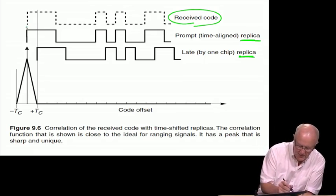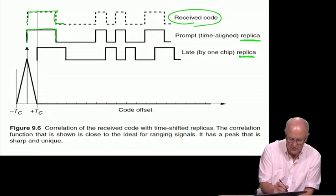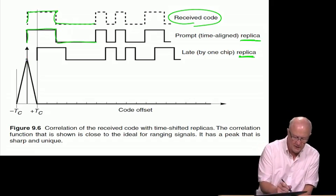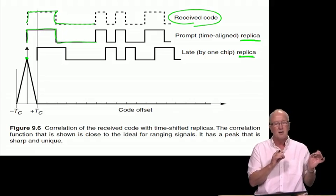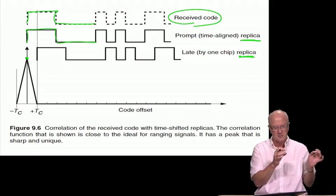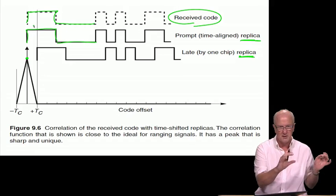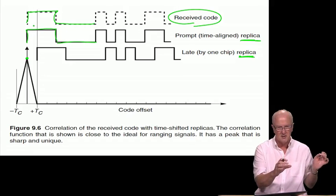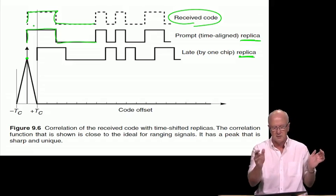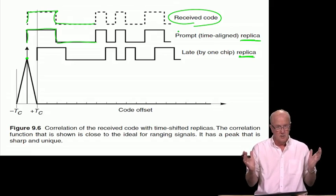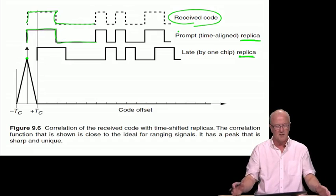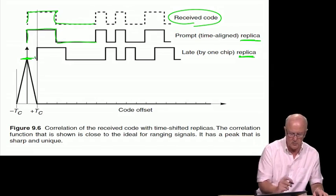Notice that when we are time aligned and we do correlation, all the plus ones align, all the minus ones aligned, and we get a very strong correlation because correlation sums the products. So the products are these individual plus and minus one multiplications. As we do many of those, let's say a thousand of them over the course of one CA code, we add up all those products. When they're aligned, we get a thousand plus ones added together, and so we get a very strong auto correlation.